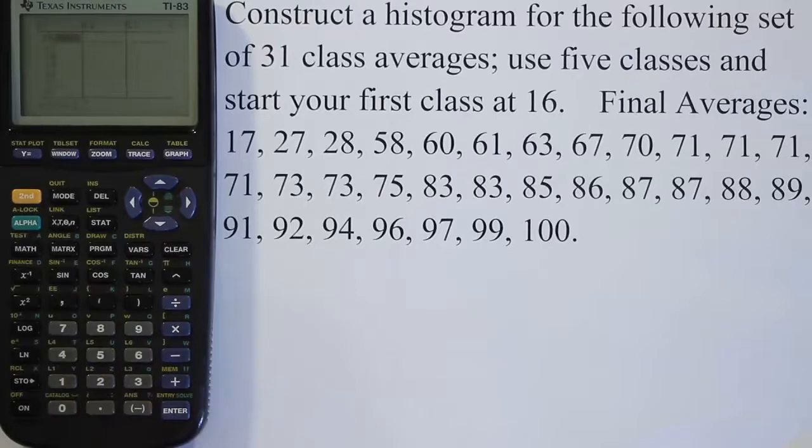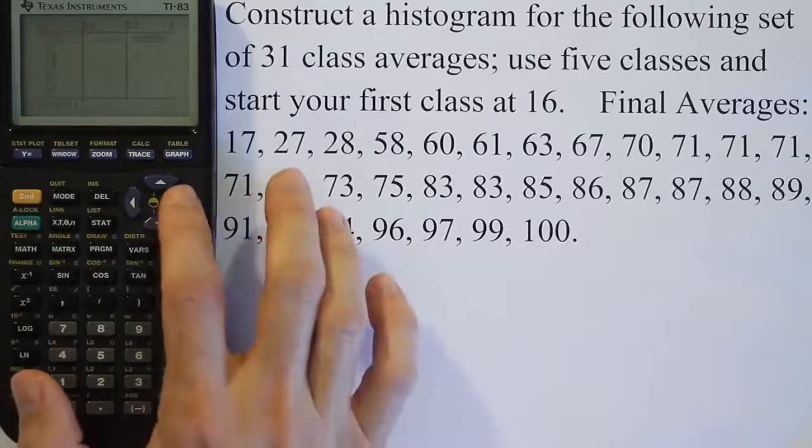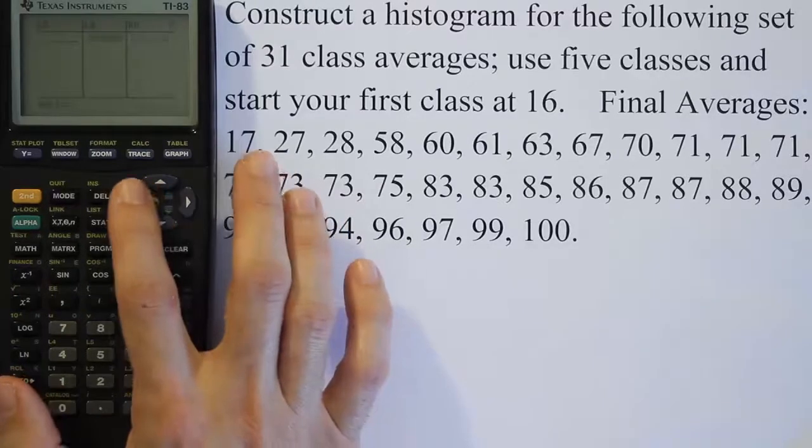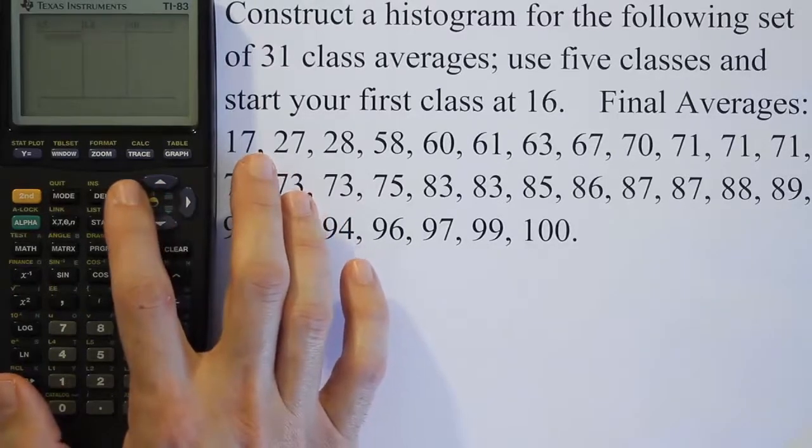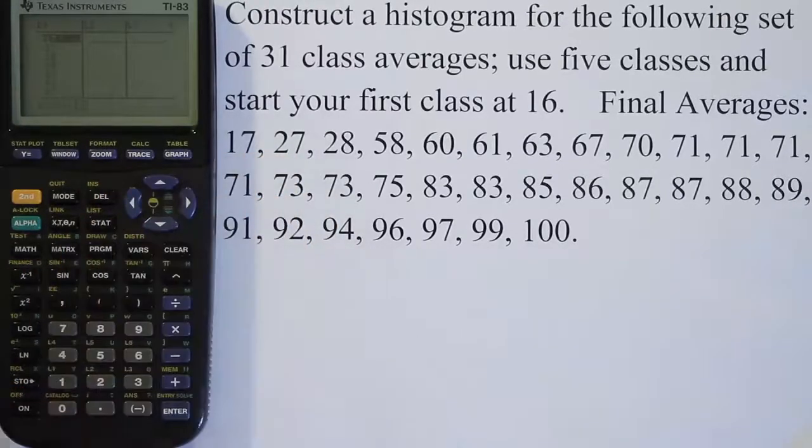I'm going to hit enter and we have some numbers in that first list. So you can see we have three lists in our screen and if we go over we can see more lists. We have usually up to six lists with names and then there's actually some more lists that are unnamed usually. We can scroll back over to where it says L1, that first list. And you can see in mine I have data in it.